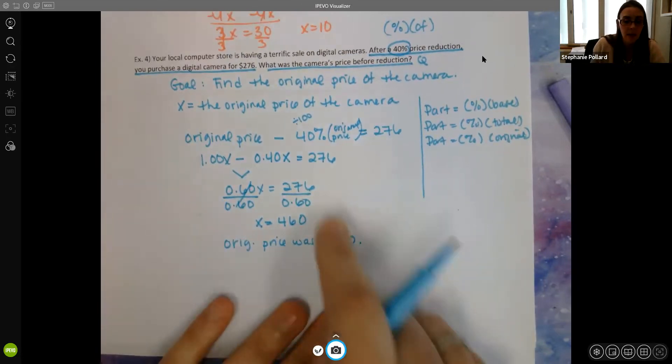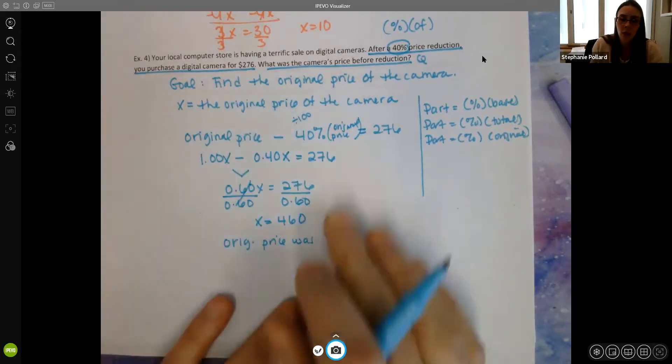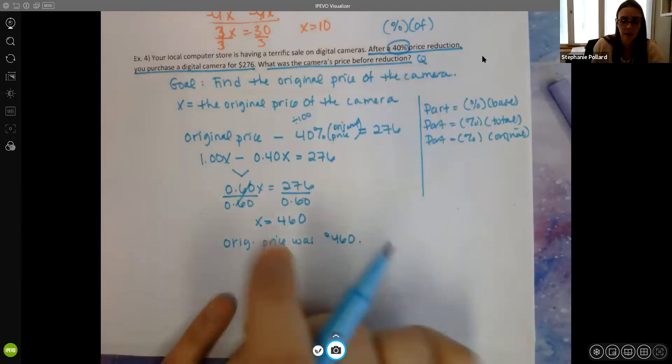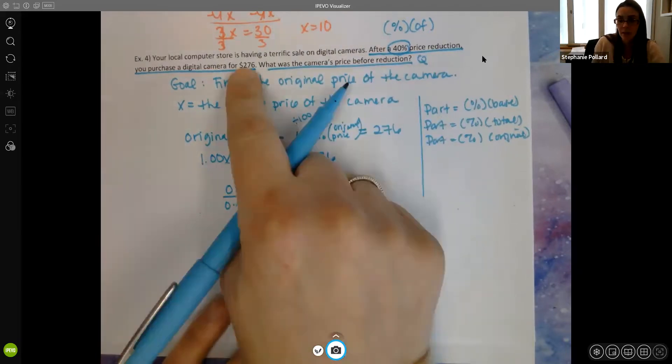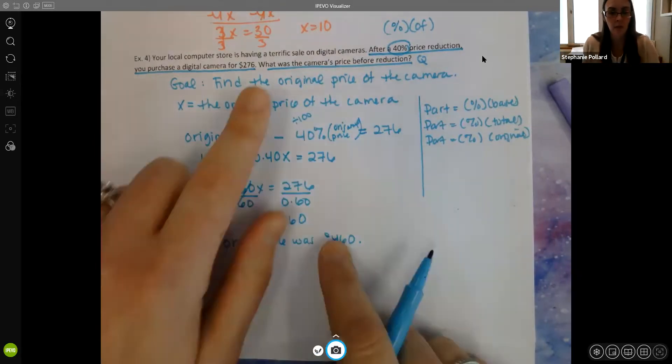So the original price was $460. This also makes sense. The original price should be bigger than the discounted price. 40% is not quite half, but it's almost half. So this looks like a pretty good comparison, 460 to 276. It's not quite cut in half, but it's almost there. So this looks right. We look like we're on the right track here.